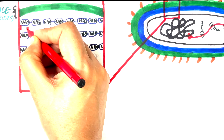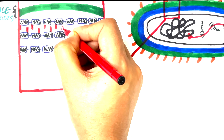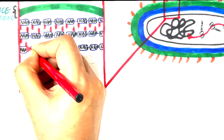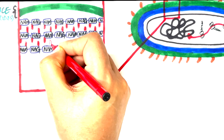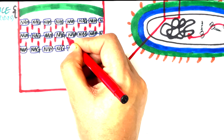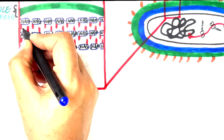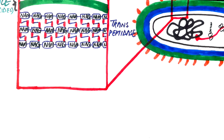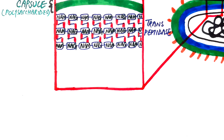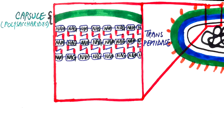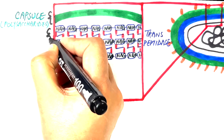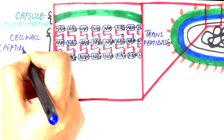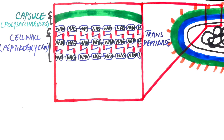Peptide chains extend from each NAM and NAG subunit. The NAM and NAG subunits are arranged in rows, and each of the subunits in alternating rows are cross-linked through the enzyme transpeptidase. The cell wall is a tough layer that gives the bacterium a characteristic shape and prevents it from osmotic and mechanical stress.